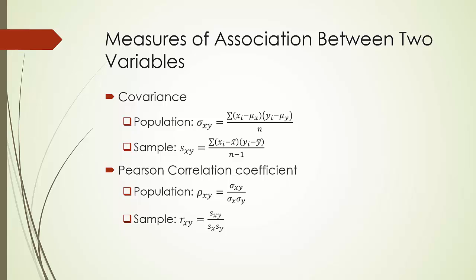Just a reminder: a correlation coefficient of 0 implies no linear relationship. It does not say that x and y are not associated at all. As a matter of fact, if y is equal to x squared, we can easily show that the Pearson correlation coefficient between x and y is 0 — meaning no linear relationship — but x and y have a perfect quadratic relationship.